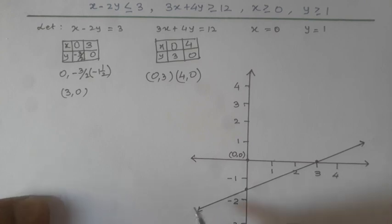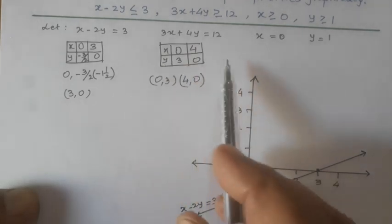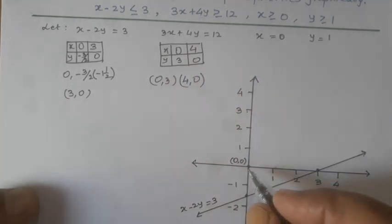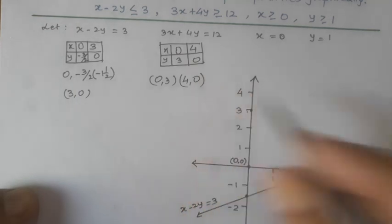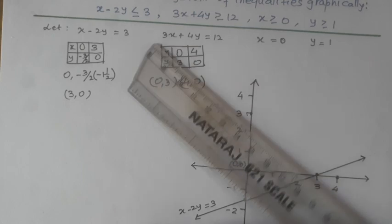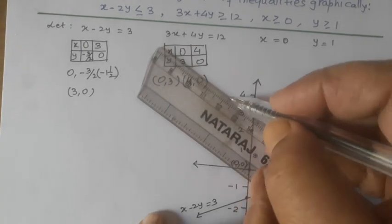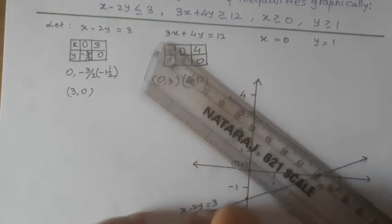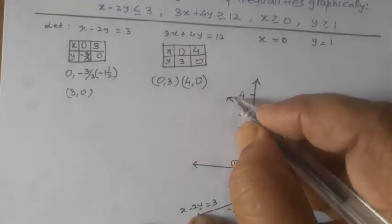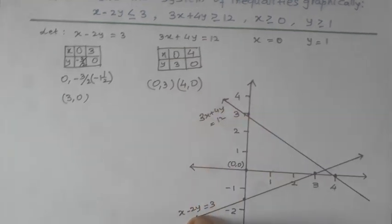Again, for the other inequality, 0, 3. 0 is here, 3 on y-axis is here. 4, 0. 4 on x-axis is here, 0 means it will remain here. So, we shall again join these two points. And this is for 3x plus 4y equal to 12.